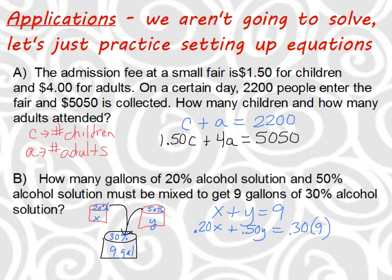One important note: always write a complete sentence to explain your answer on these word problems — don't write the answer as an ordered pair. For the fair problem, write something like 'there were 15 children and 37 adults.' For the mixture problem, write something like 'I need blank gallons of the 20% solution and blank gallons of the 50% solution to get the desired result.'